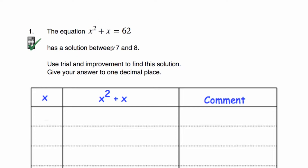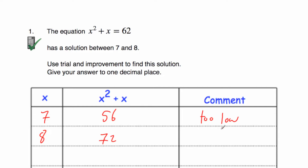The solution is between 7 and 8. Let's try 7: 7 squared plus 7 equals 56. Now we want 62, so that's too low. Now let's try 8: 8 squared plus 8 equals 72. Now we want 62, so that's too high. Now we're trying to find a solution to one decimal place, so let's try 7.5: 7.5 squared plus 7.5 equals 63.75. Too high.